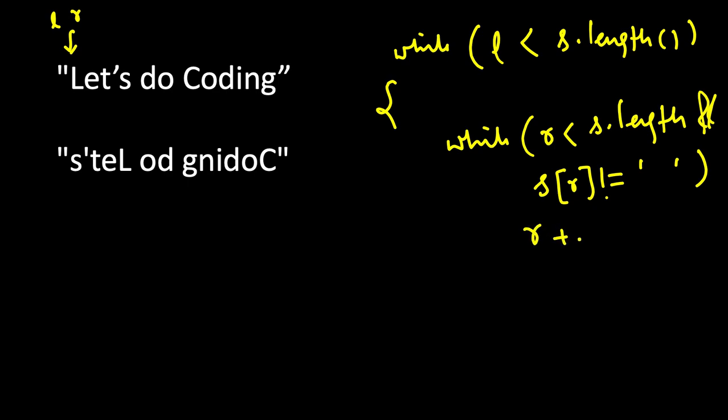So initially l and r both are here pointing to l. When r comes here it finds a space, so this inner loop will end. Here l is pointing to the beginning and r is pointing to one position behind the word. So we will reverse it: reverse s.begin plus l and s.begin plus r.